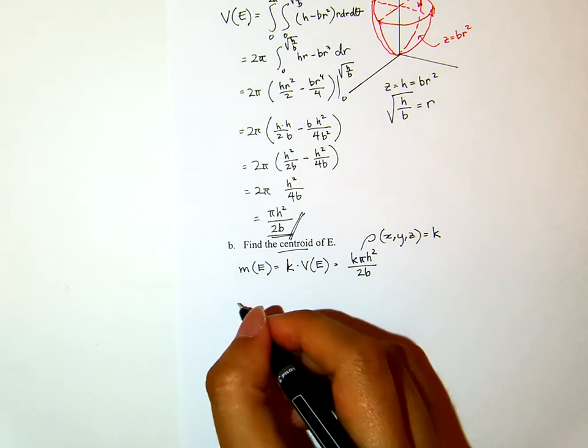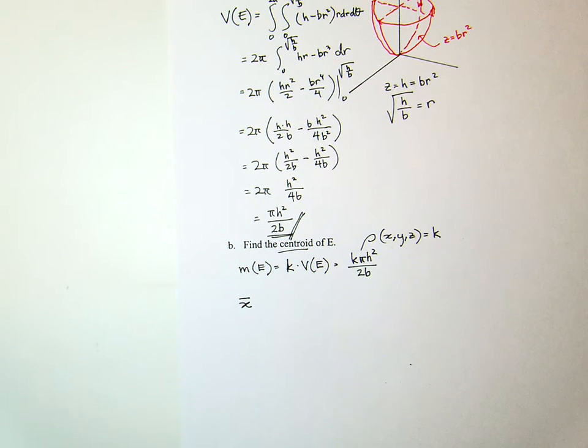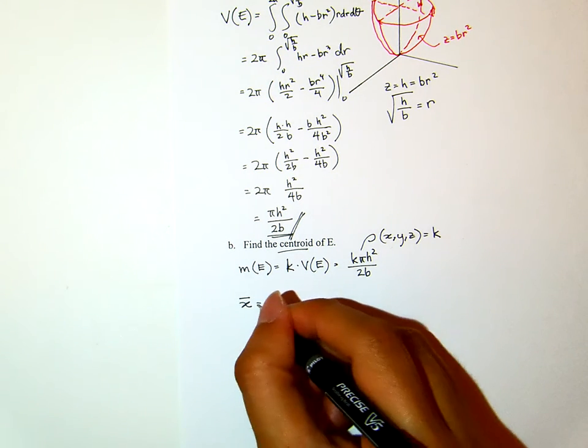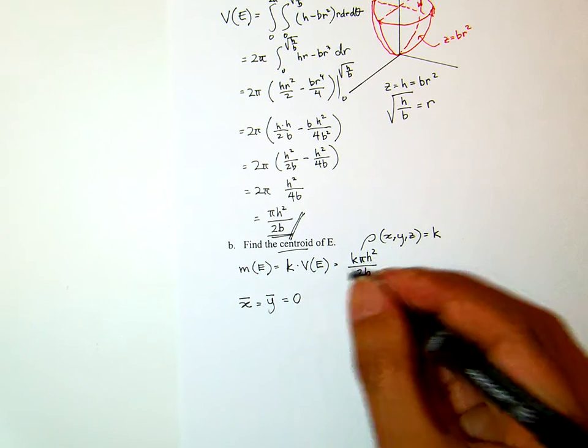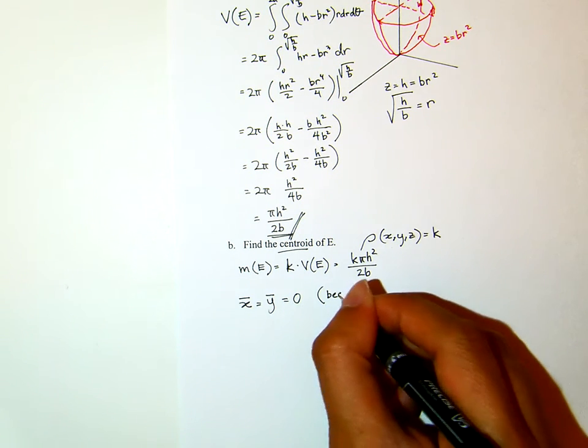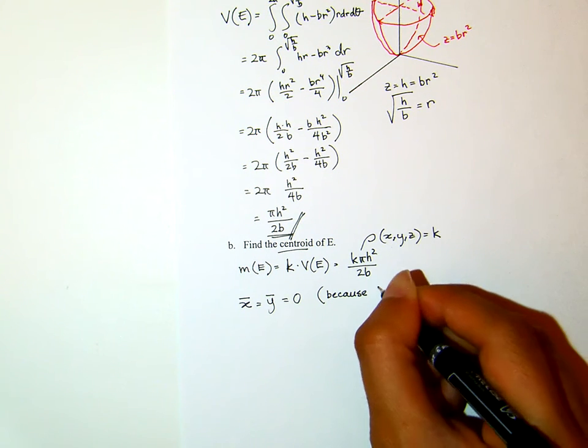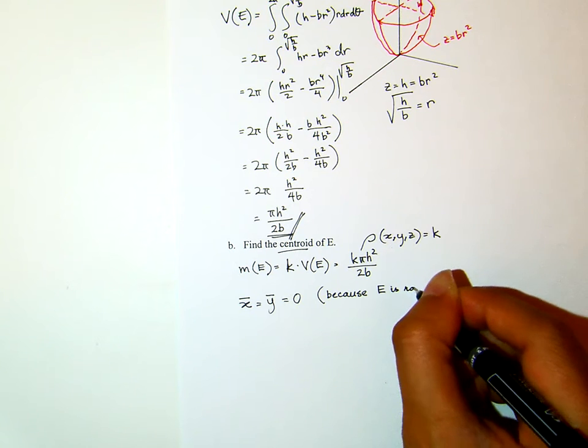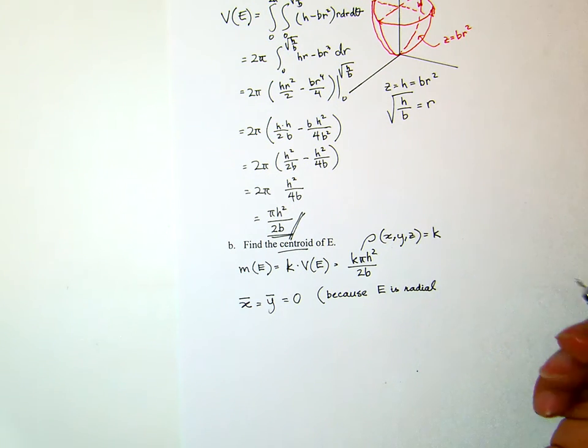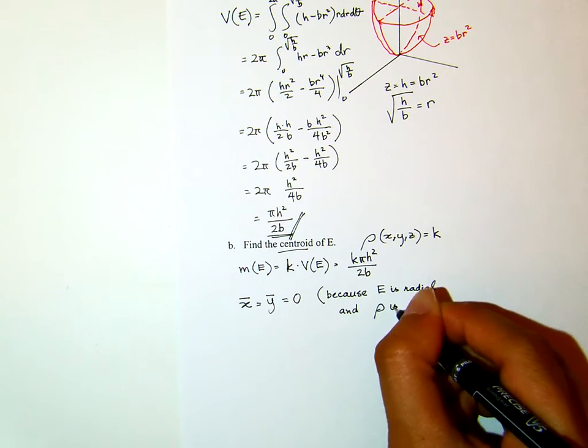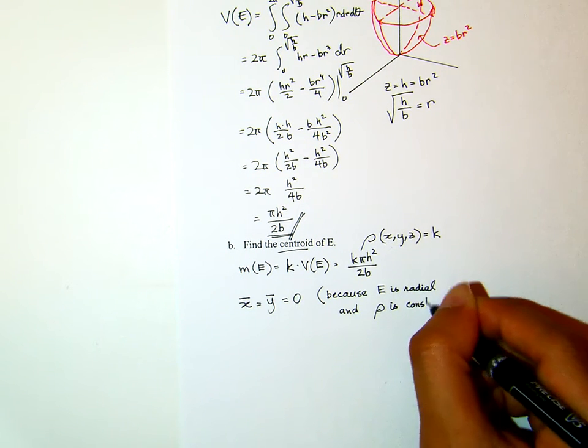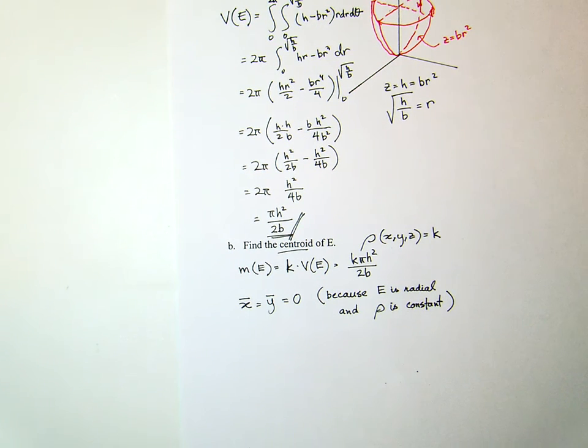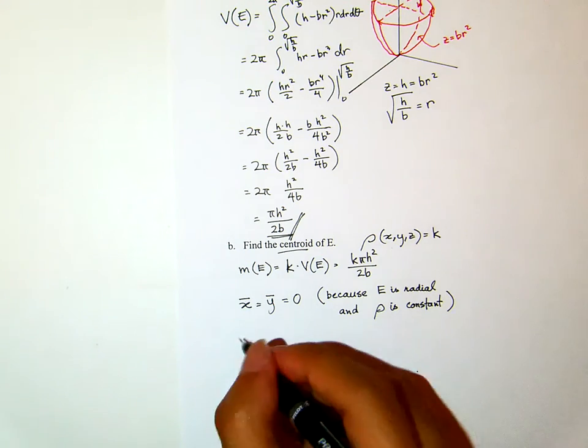Now, we want to find x̄, but if you think about that, this solid is radial. Second, the density is constant everywhere. Therefore, x̄ and ȳ should be 0, because E is radial and the density is constant.